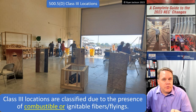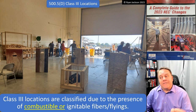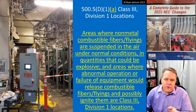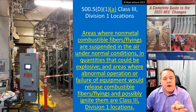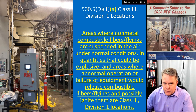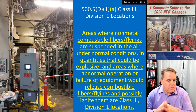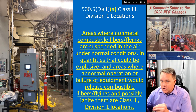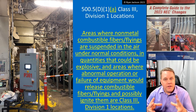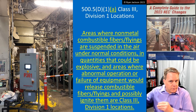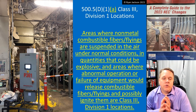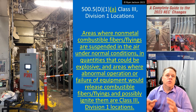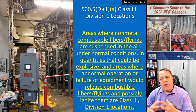When do you have a Class 3 Division 1 versus a Class 3 Division 2? It's still not perfect, but it's definitely better than it has been. Class 3 Division 1 locations per 500.5(D)(1)(a) are areas where non-metal combustible fibers or flyings are suspended in the air under normal conditions. The key point is non-metal fibers and flyings — if you're dealing with metal materials like aluminum or zirconium, that's a different classification entirely.